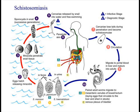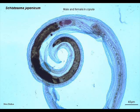After parasite mating occurs in the portal or vesicular blood system, egg production occurs. In contrast to the adult parasites, the parasites' eggs stimulate a strong immune response in most humans. Some eggs migrate through the bowel or bladder tissue. Eggs shed into urine or feces may reach maturity in fresh water and complete their life cycle by infecting susceptible snails. In addition, some adult worms may migrate to other organs.